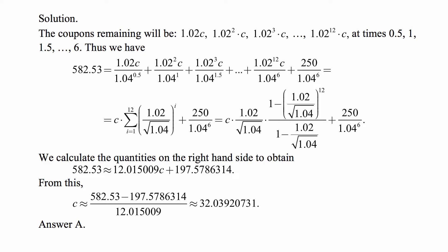You should remember that formula for a partial sum of a geometric series that starts with 1. What we have here is c times (1.02/√1.04) times [1 - (1.02/√1.04)¹²]/[1 - (1.02/√1.04)].